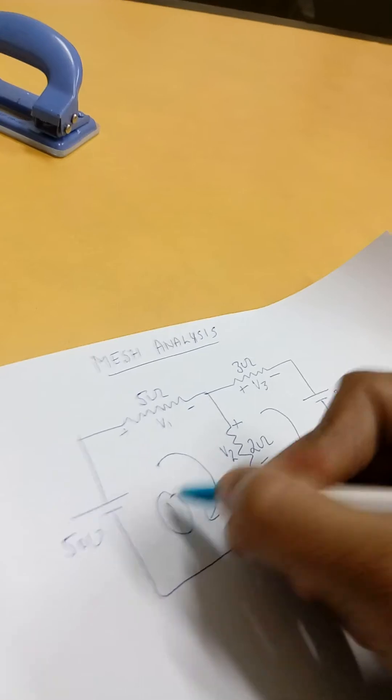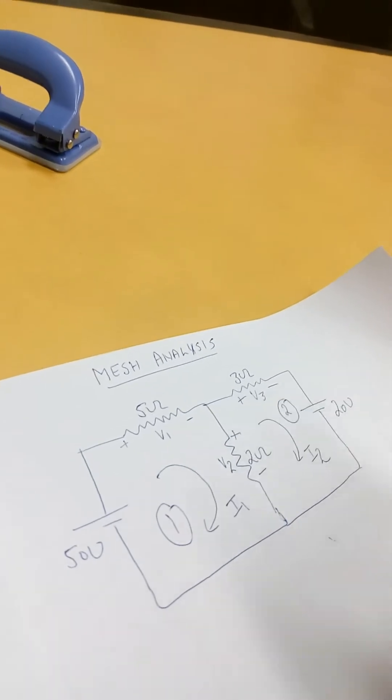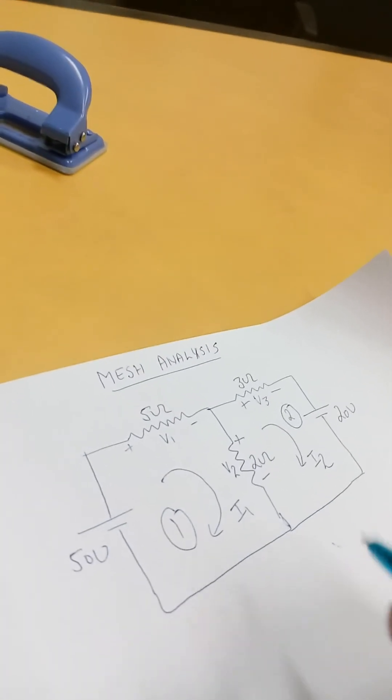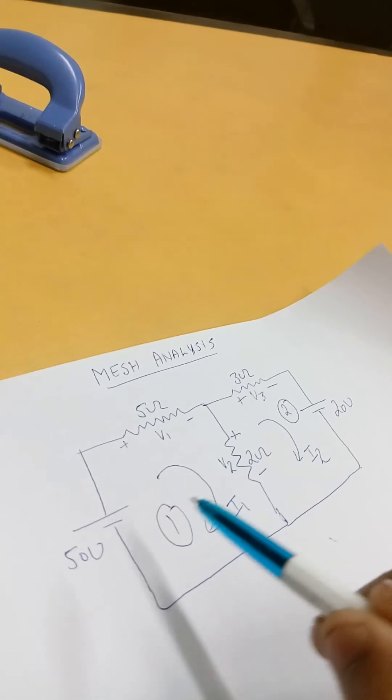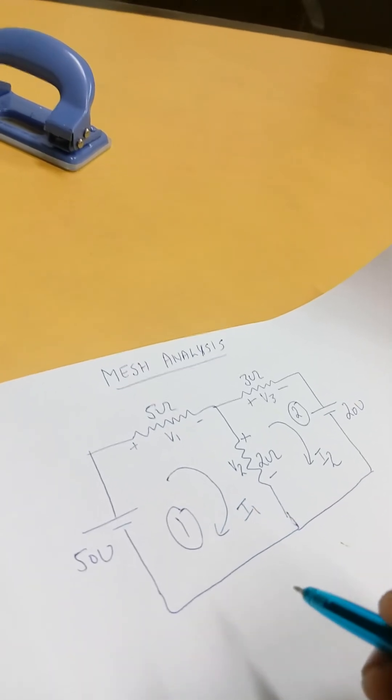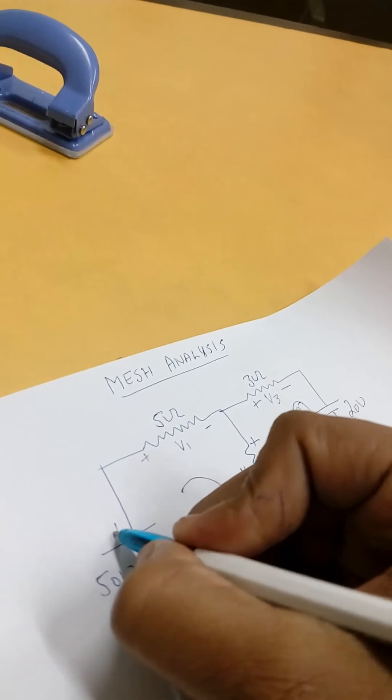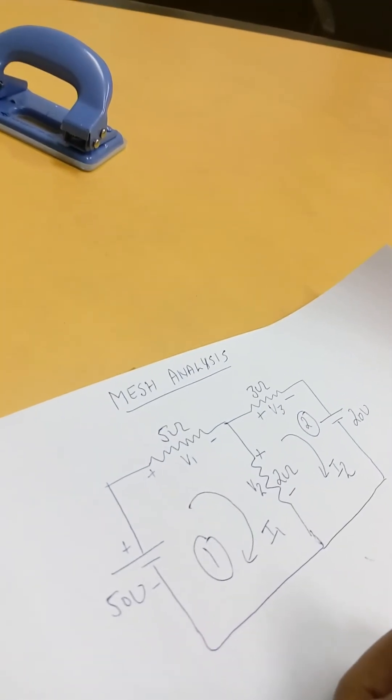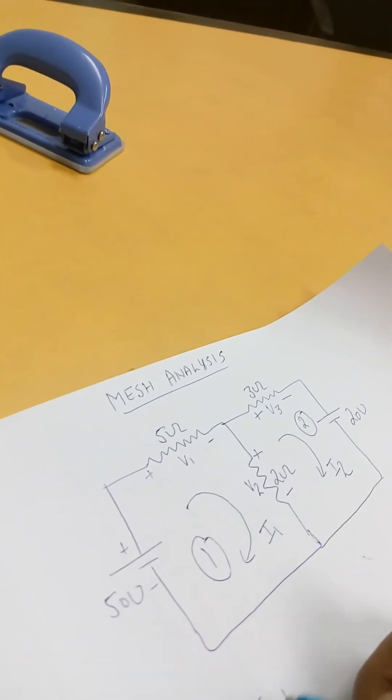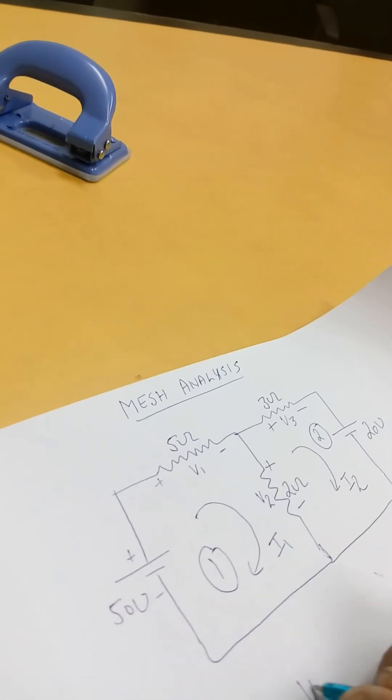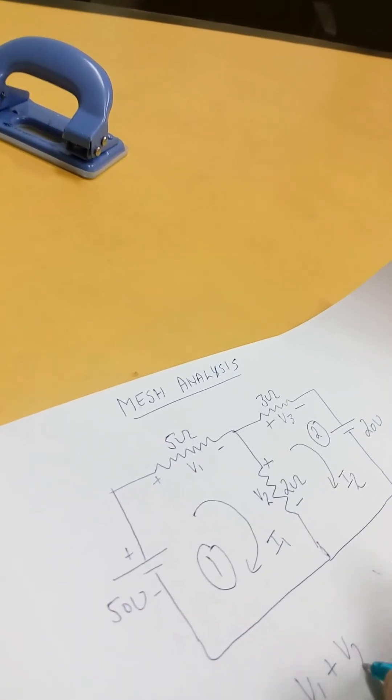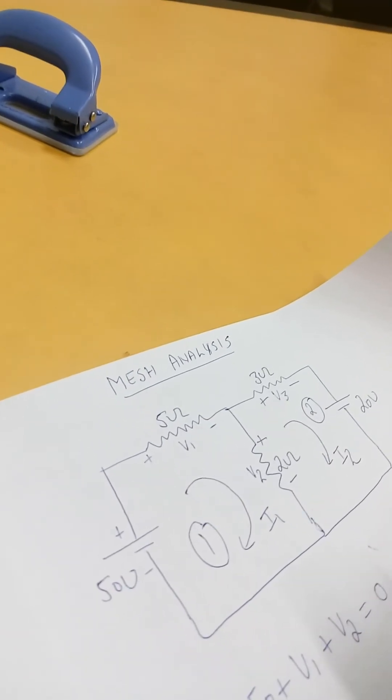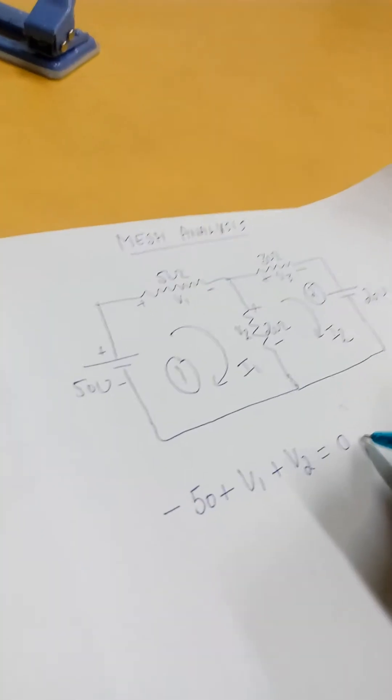This is loop one and this is loop two. So according to KVL, the algebraic sum of all the voltages is always equal to zero. So this is minus 50 plus V1 plus V2 equals to zero. This is equation number one.